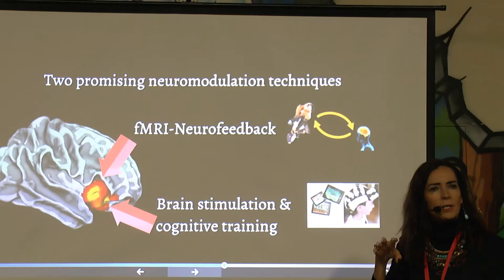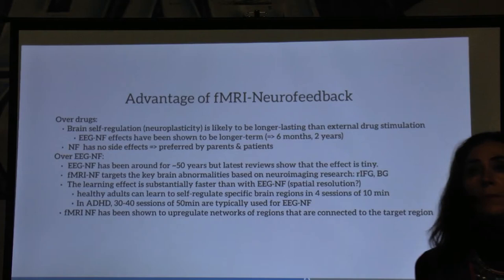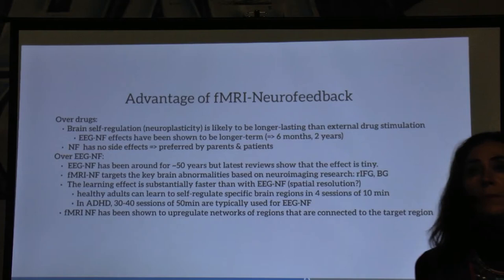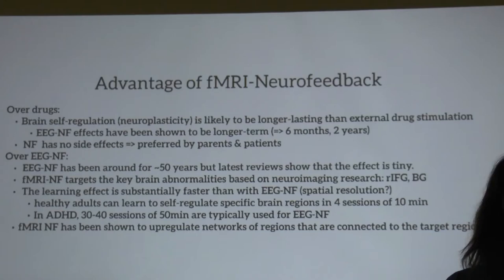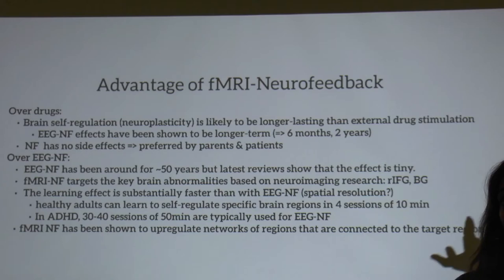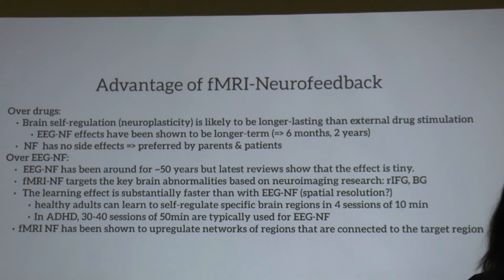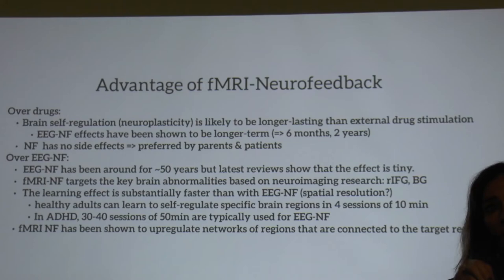Our theory is that if we teach children to self-regulate this brain activity, it has a better and longer-lasting effect than a drug — because a stimulant's effect is gone by the next day or evening. EEG neurofeedback has shown longer-term plastic effects up to two years, but the latest studies show EEG neurofeedback is not working well — the effect is very small. fMRI neurofeedback is much better because it has superior spatial resolution and can target those key areas. The inferior frontal cortex cannot be targeted with EEG because it's too deep and EEG is too superficial.